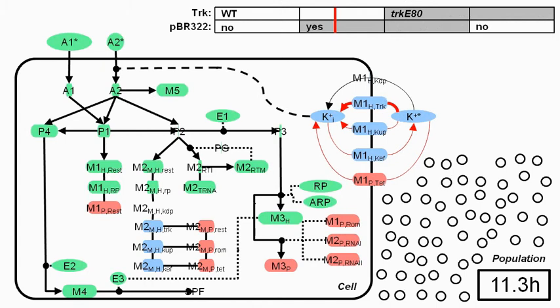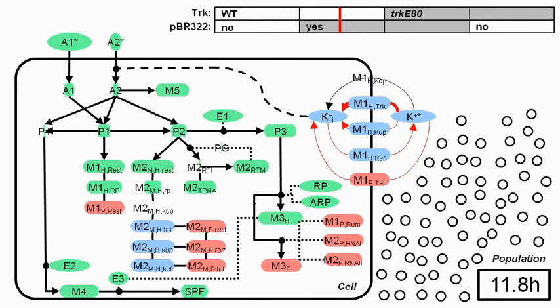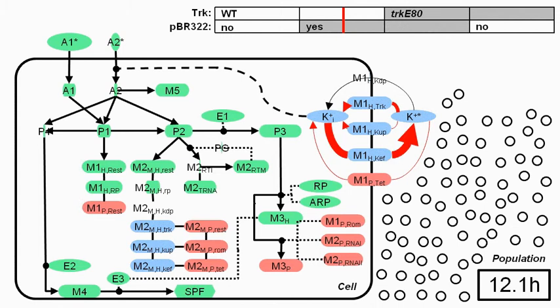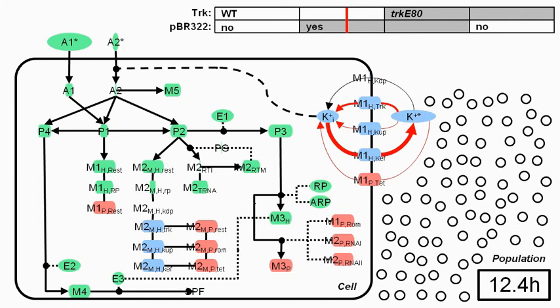You can see that the tetracycline efflux pump, TET, takes up potassium. However, the uptake rate is much less than that of the TRAC system, and the added efflux by KEF is small.